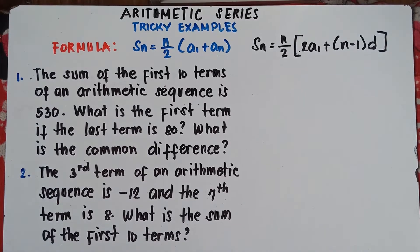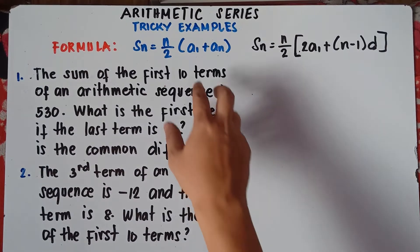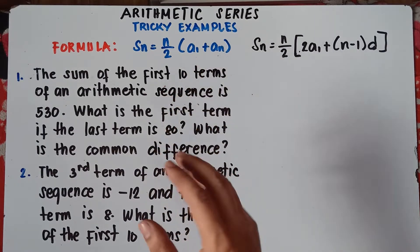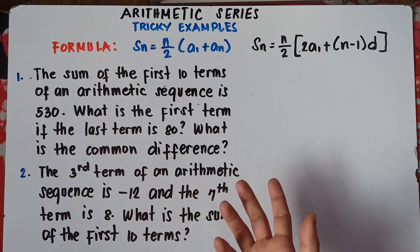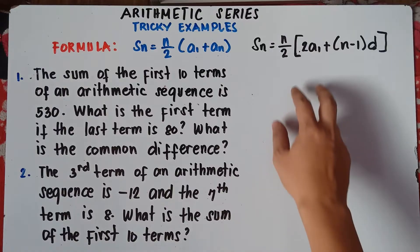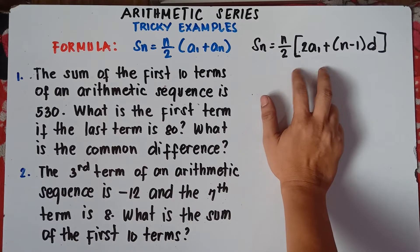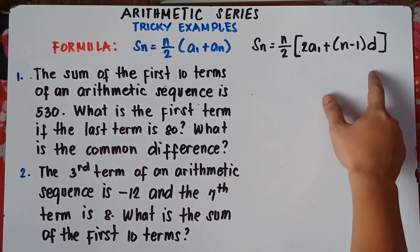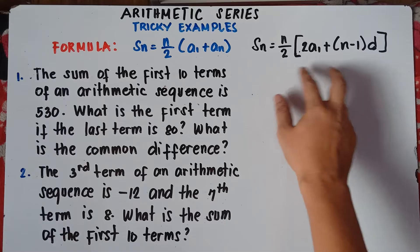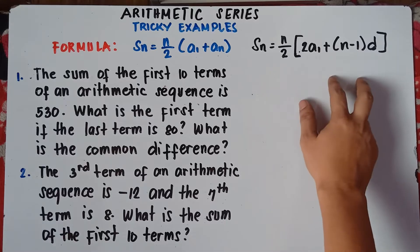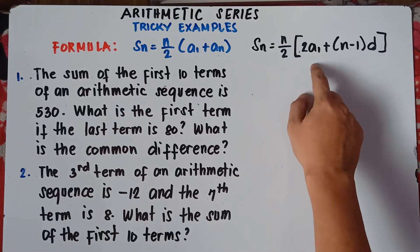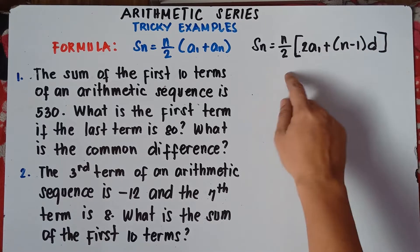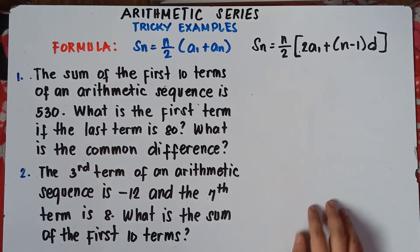The second formula: S of n equals n divided by 2, bracket 2 times the first term added by quantity n minus 1 times the common difference. The difference between these two formulas: use the first formula if you have the value of the last term. Use the second formula if you have the first term and the common difference.